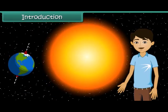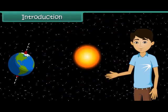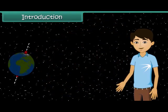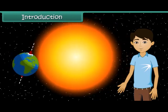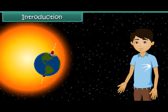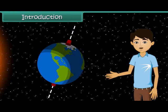Hello students, can you imagine how cold the earth would be if there were no sun? The sun is the earth's main source of heat. Only a little of the sun's heat reaches the earth; however, this is enough for life to exist on earth.